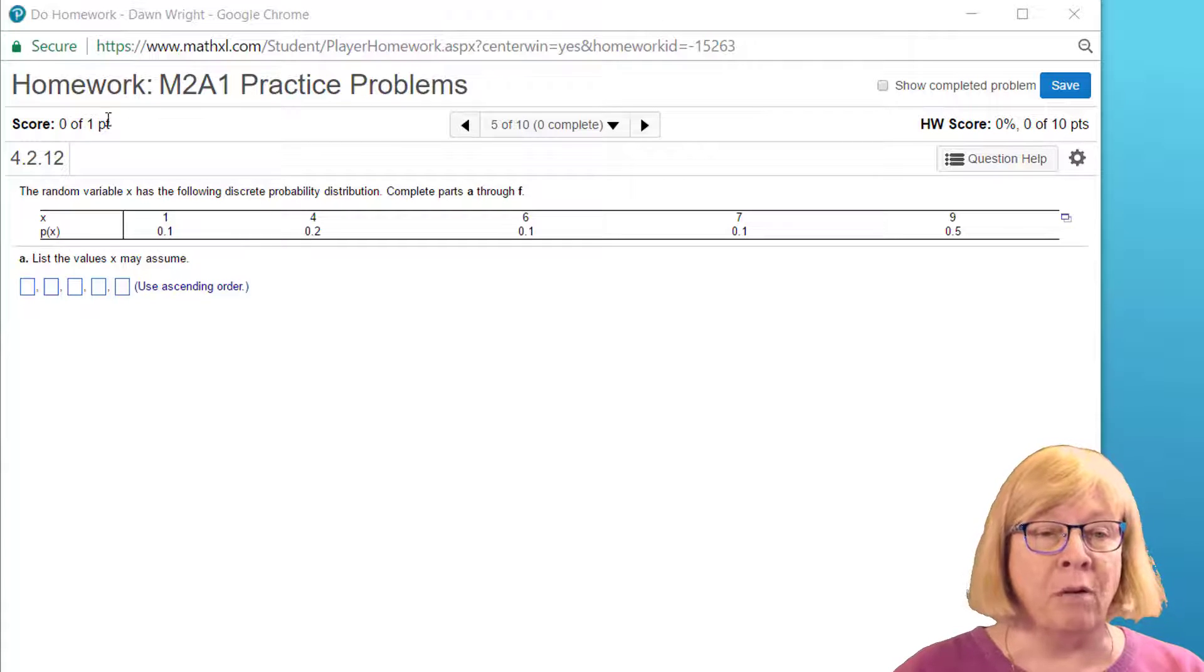This is a practice problem from the homework and it says we have a random variable X that has the following discrete probability distribution, complete parts A through F. And we're given a table here that we've got values of X: 1, 4, 6, 7, and 9. And we've got the probability of each of those discrete values: 1 tenths, 2 tenths, 1 tenths, 1 tenths, 5 tenths.